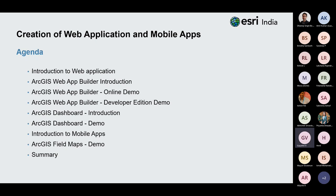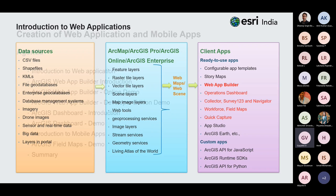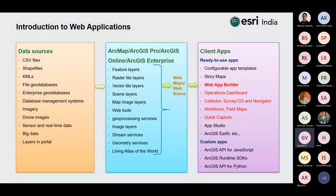A web application is an application program stored on a remote server and delivered over the internet to the browser interface, also known as client apps. The E3 platform provides different kinds of web applications categorized into ready-to-use apps and custom apps. The data for applications can be in any format such as CSV files, shapefiles, KML, file geodatabase, or interface geodatabase.